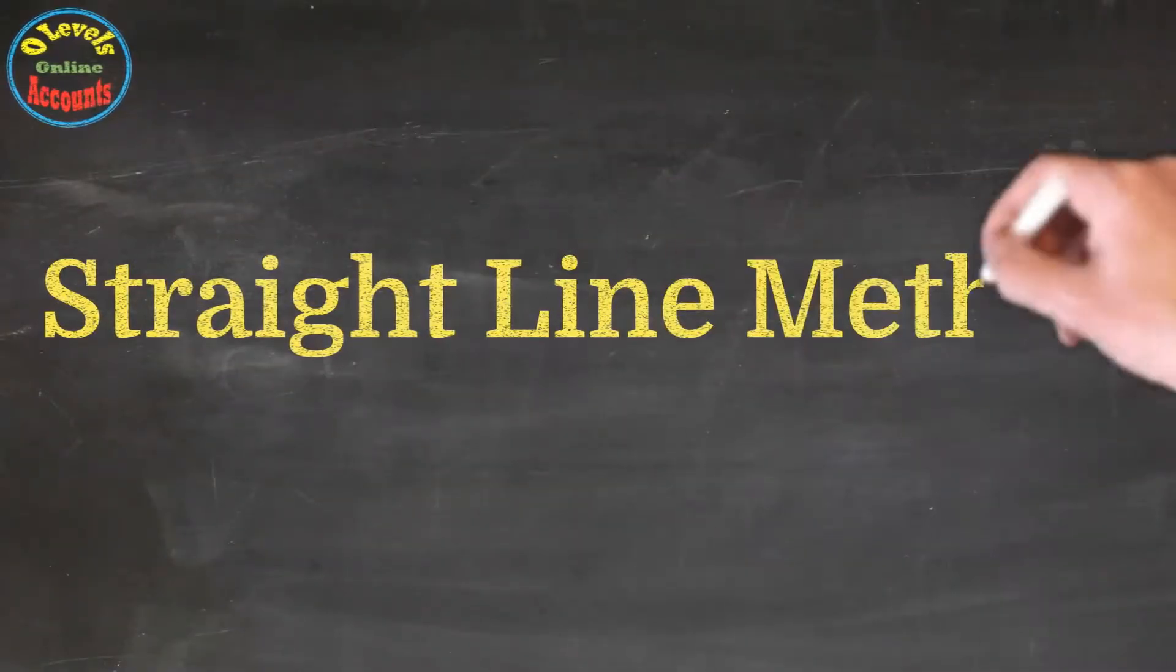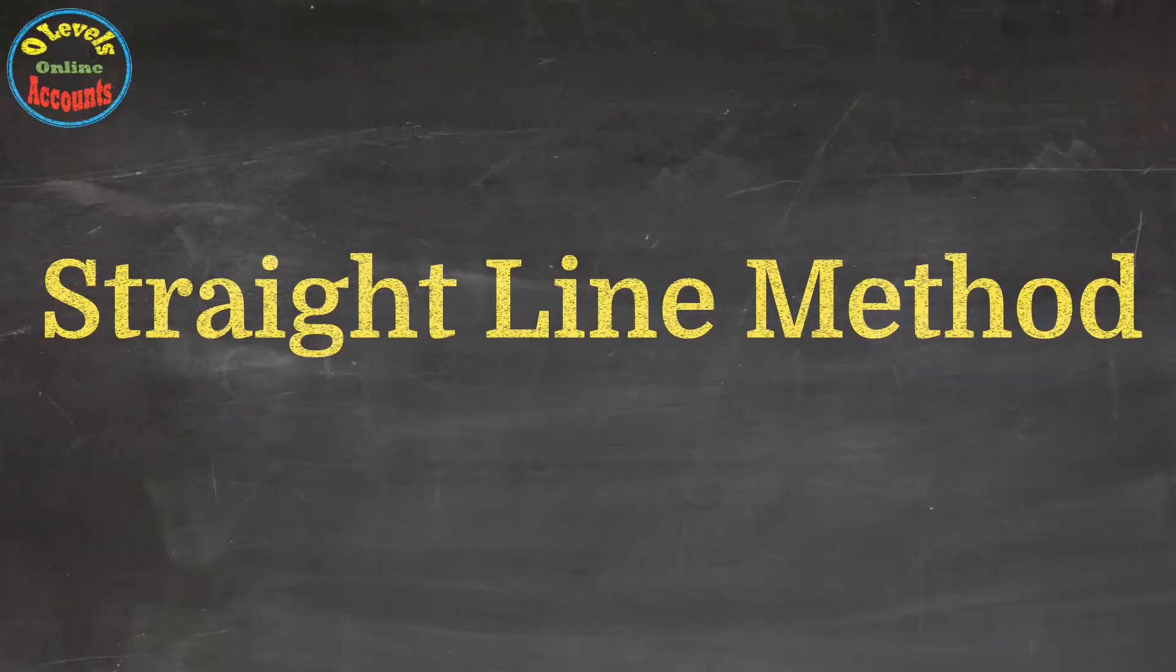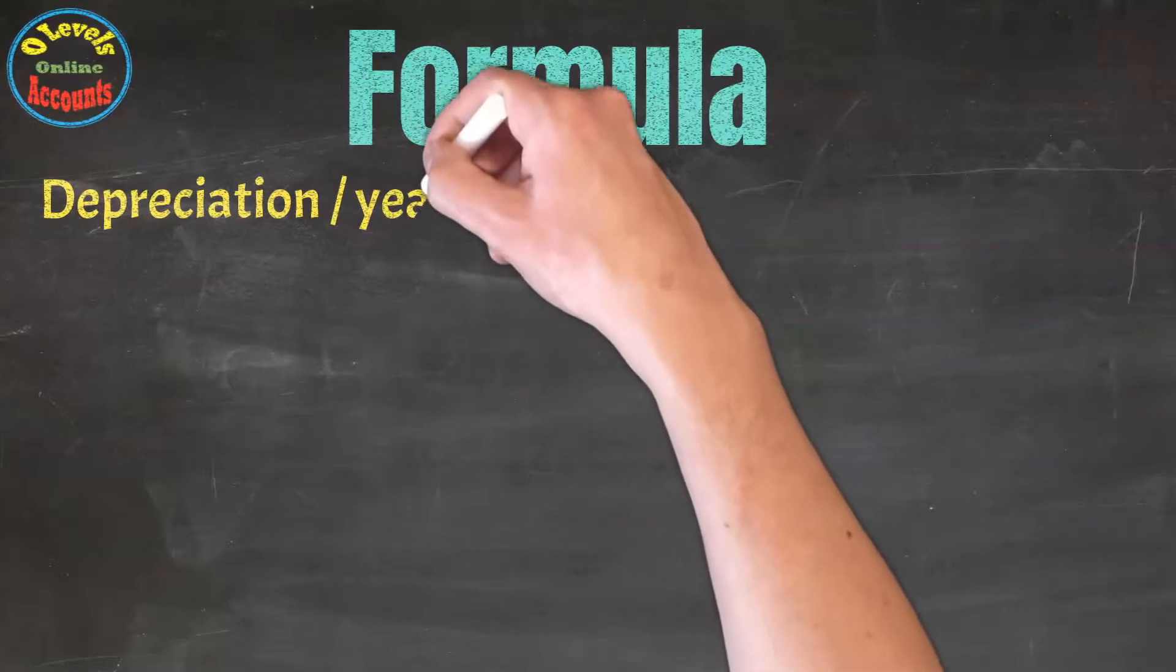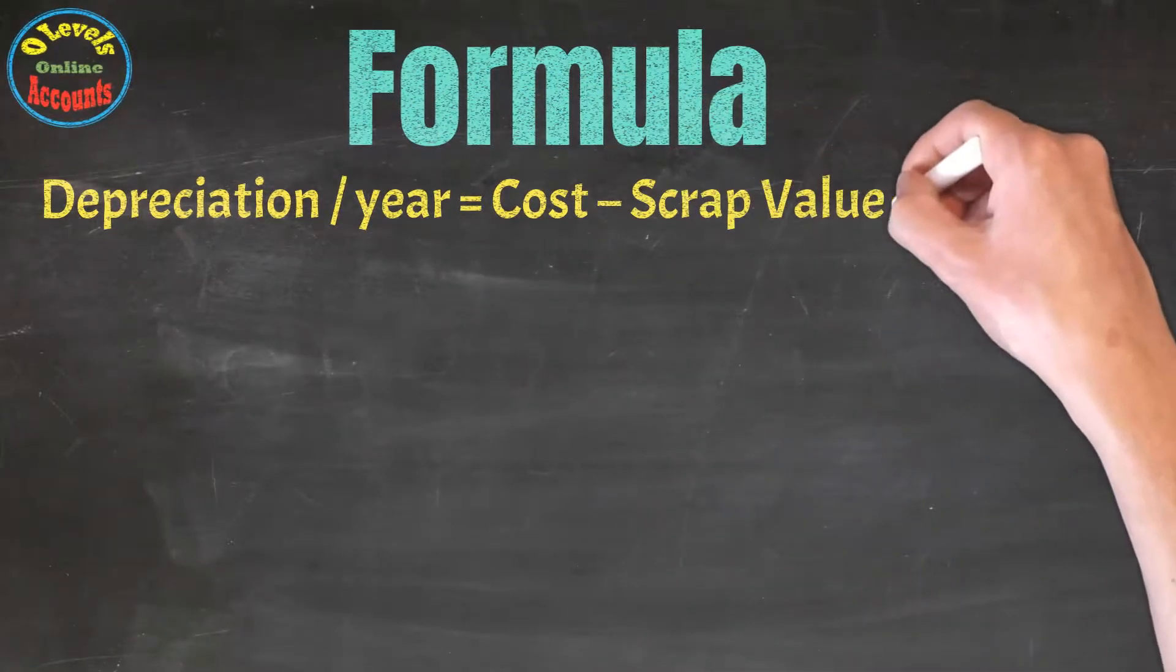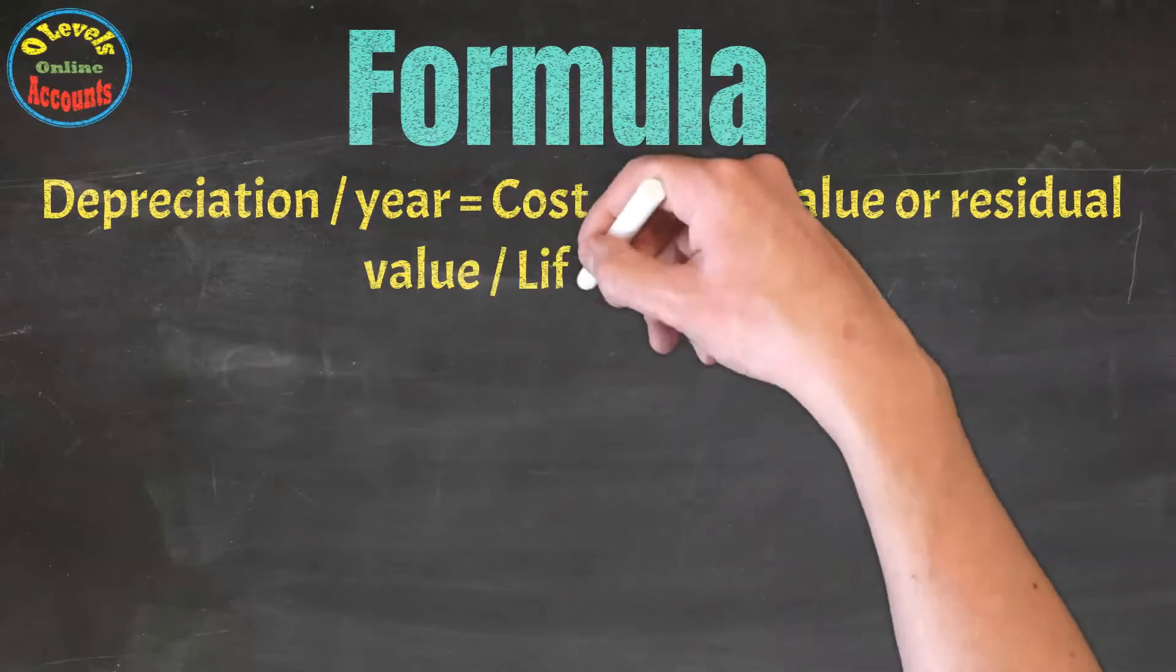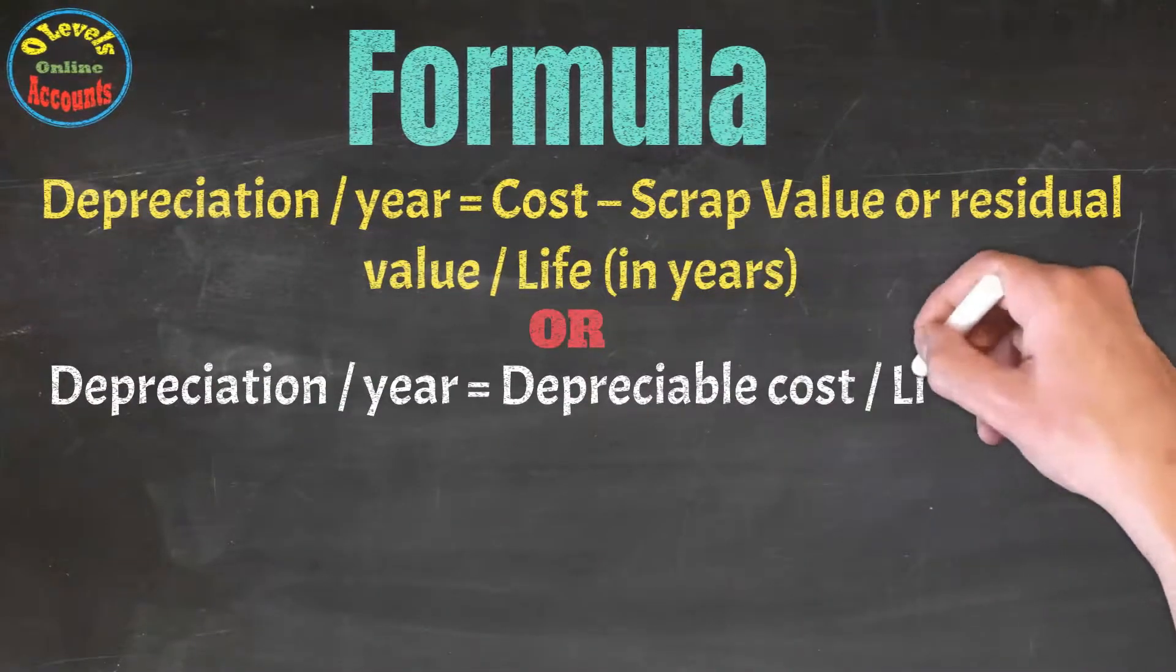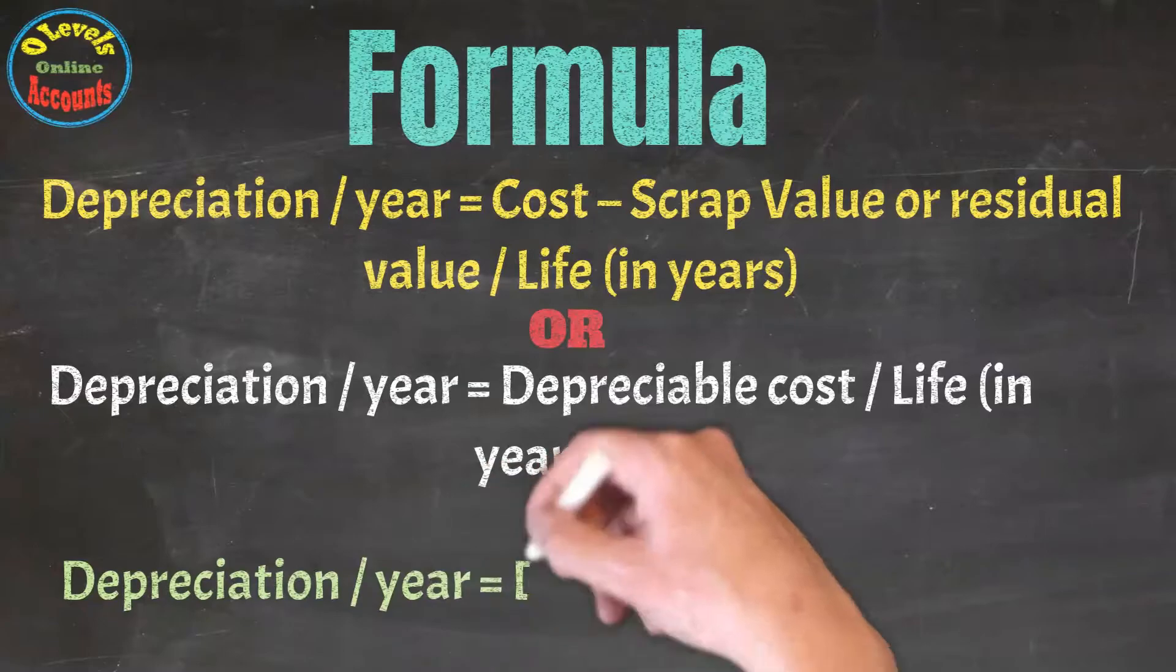Let's have a straight line method first. Look at the formula. The formula for straight line method to calculate depreciation per year is equal to cost minus scrap value or residual value divided by life in years, or depreciable cost divided by life in years, or depreciable cost multiplied by life in percentage.